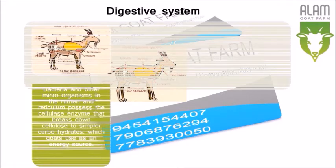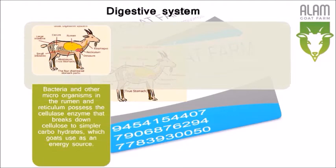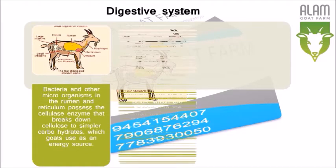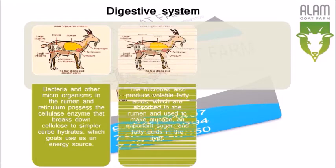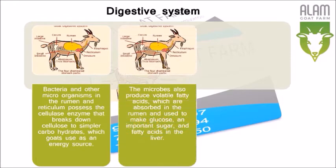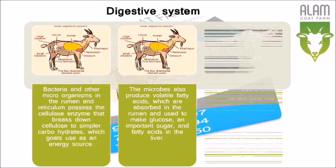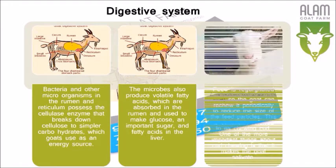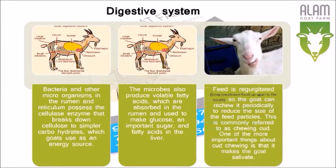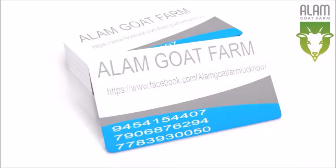Bacteria and other microorganisms in the Rumen and Reticulum possess the cellulase enzyme that breaks down cellulose to simpler carbohydrates, which goats use as an energy source. The microbes also produce volatile fatty acids, which are absorbed in the Rumen and used to make glucose — an important sugar — and fatty acids in the liver.